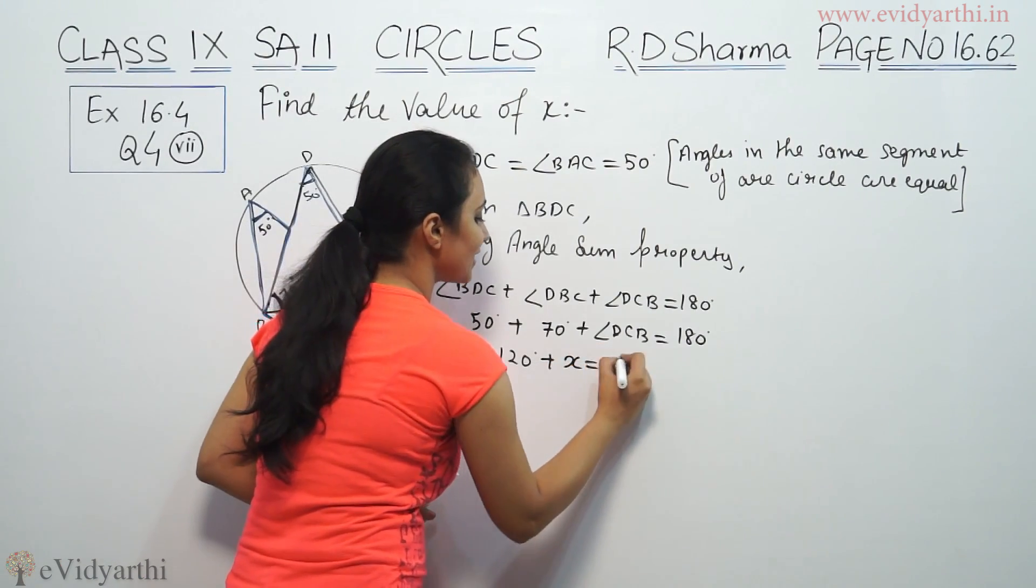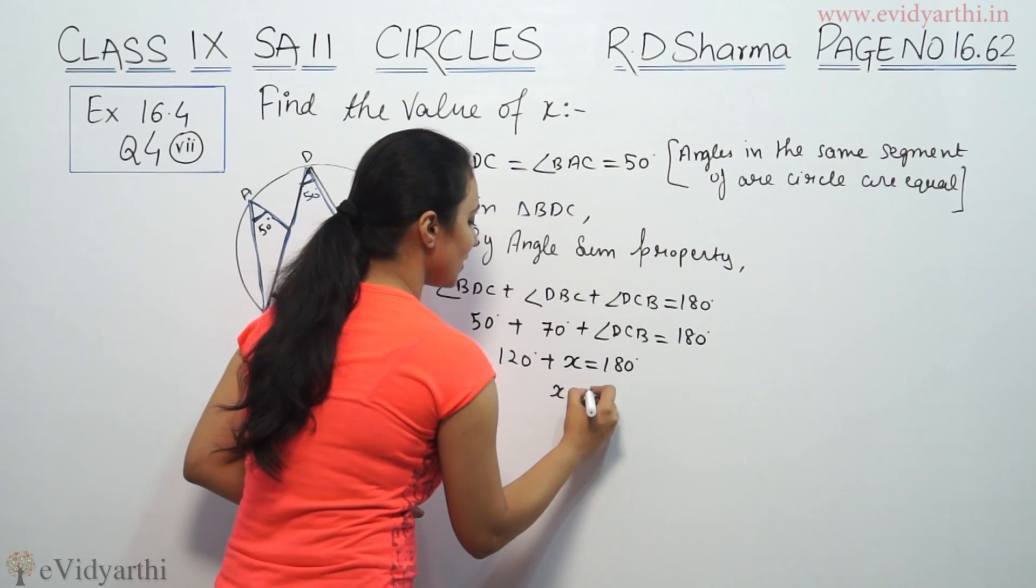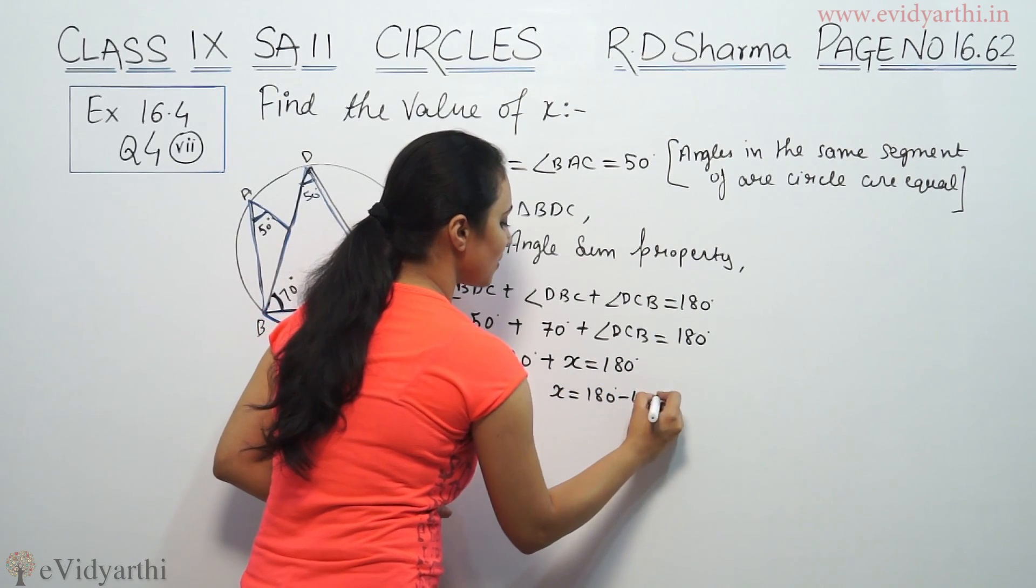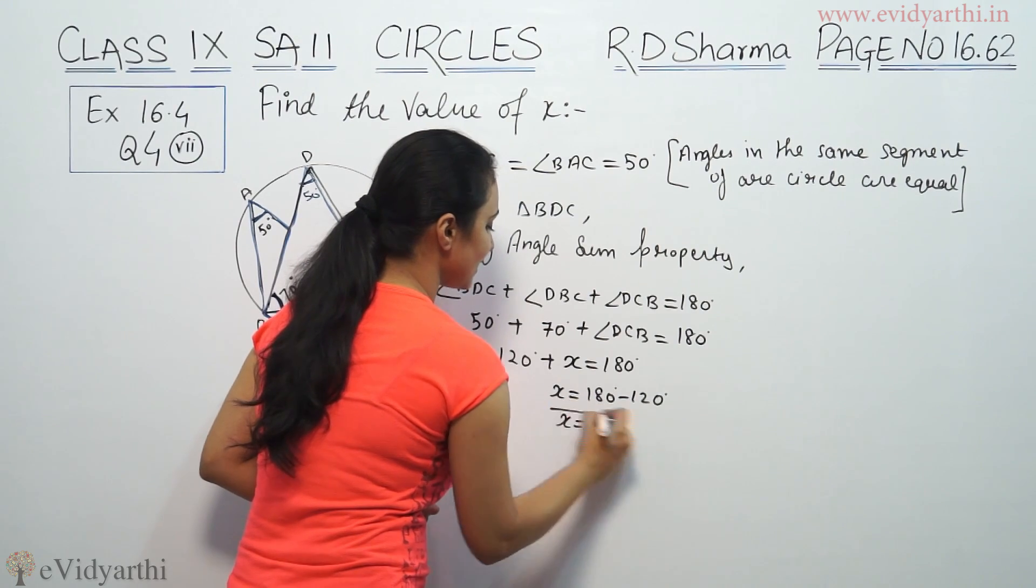So this is the equation where x is equal to 180. So x is 180 minus 120. So x will be 60 degrees.